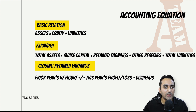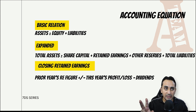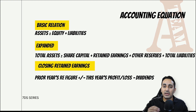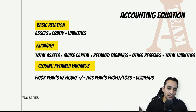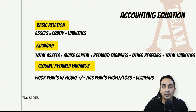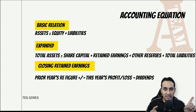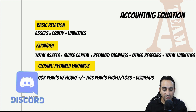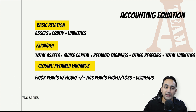एक बात point out करूँ - assets, equity, liabilities में से जो भी दो items दे रखे हैं और दोनों का closing balance है, तो जो balancing figure निकल के आएगा - जैसे asset और liability दे रखा है दोनों का closing balance - तो equity जो निकलेगी वो भी closing balance ही होगी।